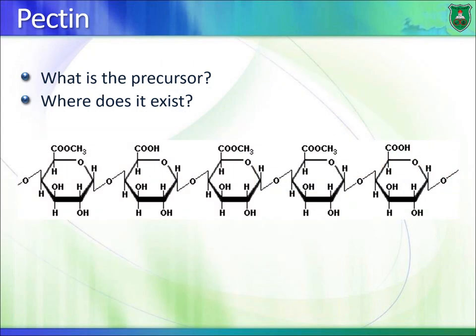Pectin is another polysaccharide found in plant cell walls alongside cellulose. It is made of galacturonic acid — galactose modified as a sugar acid — which can also be modified by a methyl group. The glycosidic bond in pectin is alpha-1,4. Pectin is also widely used in the food industry.